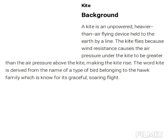A kite is an unpowered, heavier-than-air flying device held to the earth by a line. The kite flies because wind resistance causes the air pressure under the kite to be greater than the air pressure above the kite, making the kite rise. The word kite is derived from the name of a type of bird belonging to the hawk family.